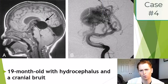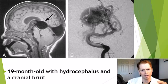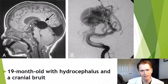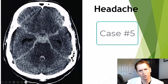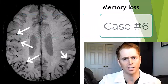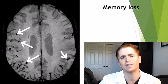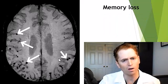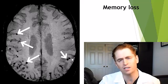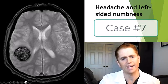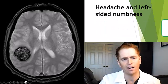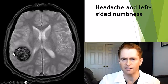This next one is a 19-month-old with hydrocephalus and a cranial bruit — placing a stethoscope on the back of the scalp reveals an abnormal sound. On the left is the sagittal MRI and on the right you can see a catheter angiogram. For this one, the only clue I'll give you is headache. This is a SWAN sequence MRI of someone with memory loss — gradient echo or GRE would show similar findings. What are these low-intensity dark circles and what is the diagnosis? This individual has headache and left-sided numbness on a gradient echo sequence — what is this very distinctive lesion?